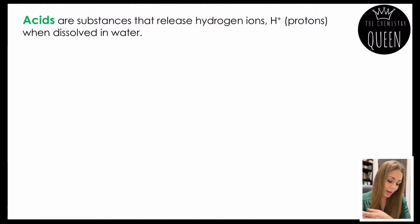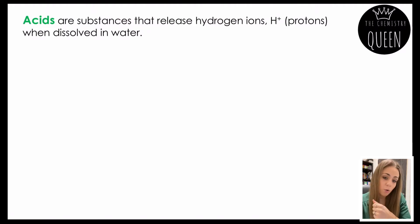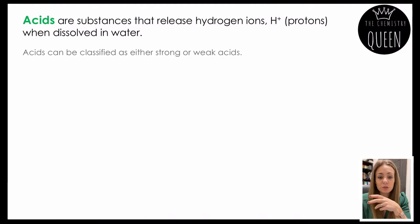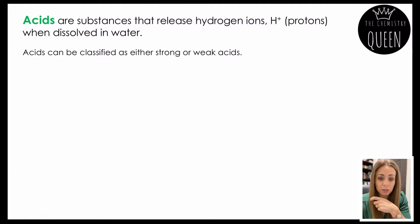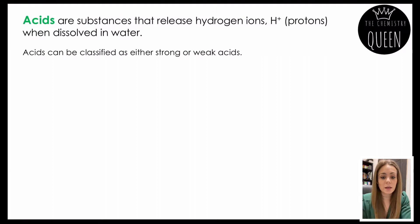Acids are substances that release hydrogen ions, or H+ ions, also known as protons, when they are dissolved in water. There are two types of acids, or they can be classified in two ways: they can either be strong acids or they can be weak acids.